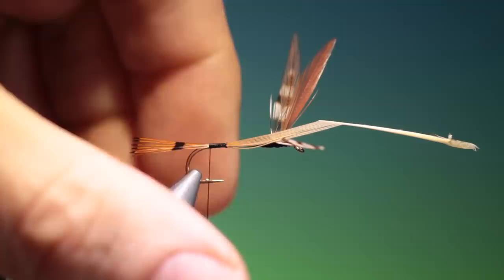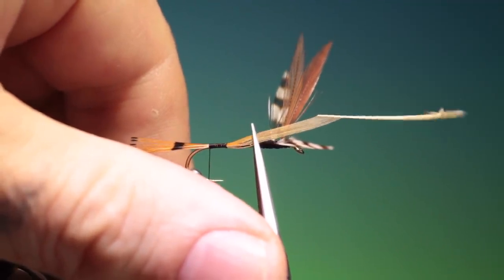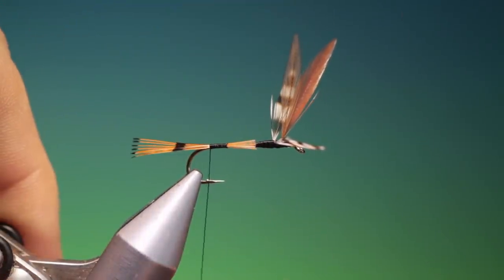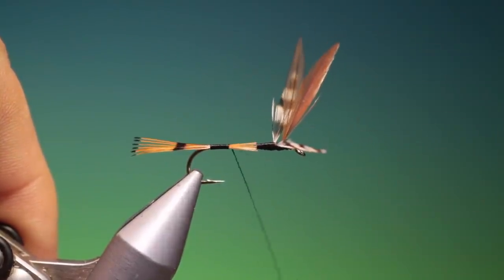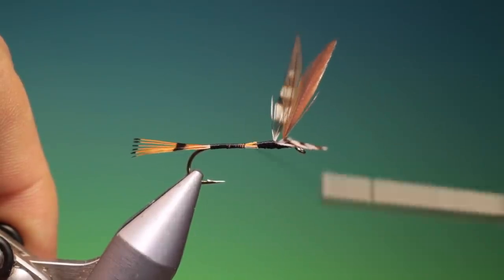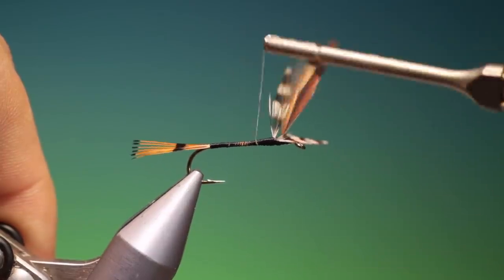Then I can come in with my scissors and trim these off the length of the body, so I get a nice even body when I do the floss work. So I'll just go over that now to clean it up. There we are.